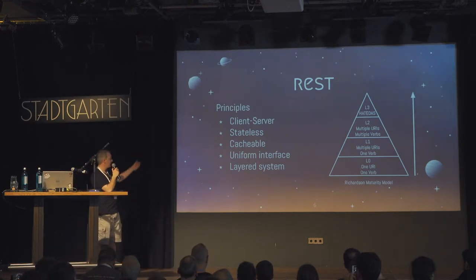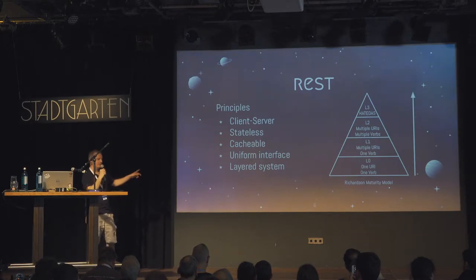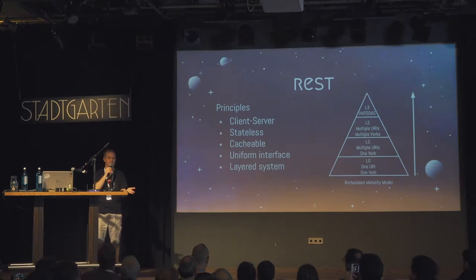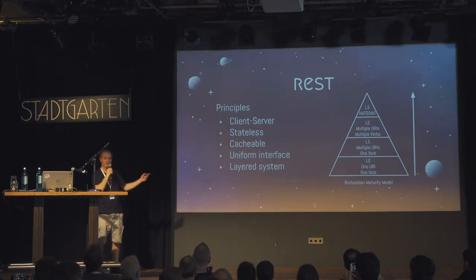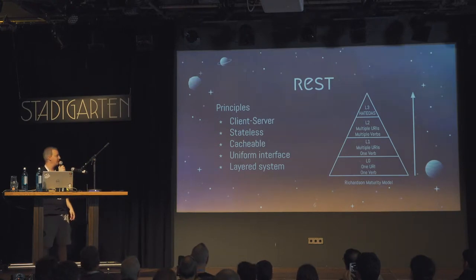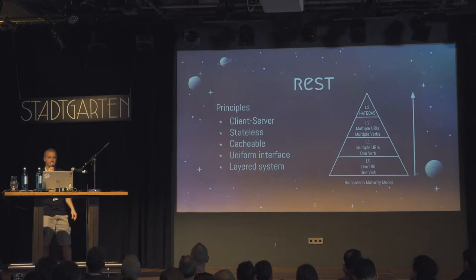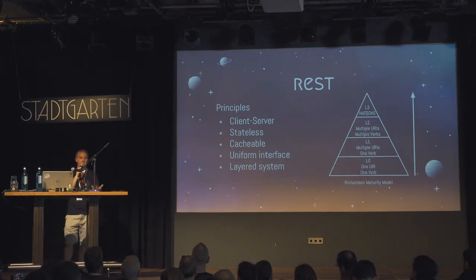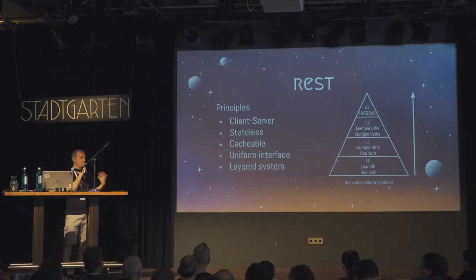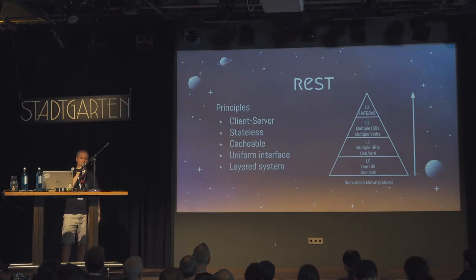REST has these principles: it's a client-server architecture; it's stateless in the sense that when you send a request, you have to provide all the information needed to solve that request. It should be cacheable. The interface must be uniform. Resources must be identifiable — they have a unique way to be identified. Changes on resources must be made through representations. You can think of a resource like a model entity, and you change it via representations using XML or JSON or something with more semantic value.